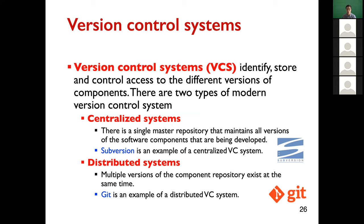The main job of version management uses version control systems, or VCS. These systems identify, store, and control access to different versions of components. There are two types of modern version control systems: centralized systems, which have a single master repository that maintains everything — an example is Subversion (SVN) — and distributed systems, where multiple versions of the repository exist at the same time, such as Git.